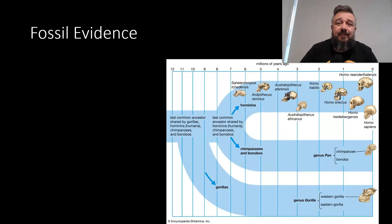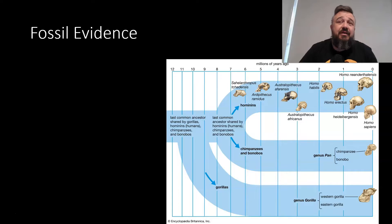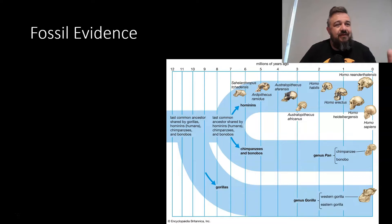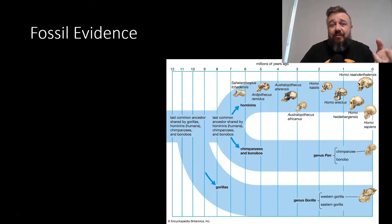Fossil evidence — this is the big one, the one we all think of. To do genetic research and linguistic research, you need a certain amount of technology and quite a deep understanding. But a fossil just makes sense — we find it in the ground, it is the remnants of a past organism. It's still there, and that's kind of incredible.